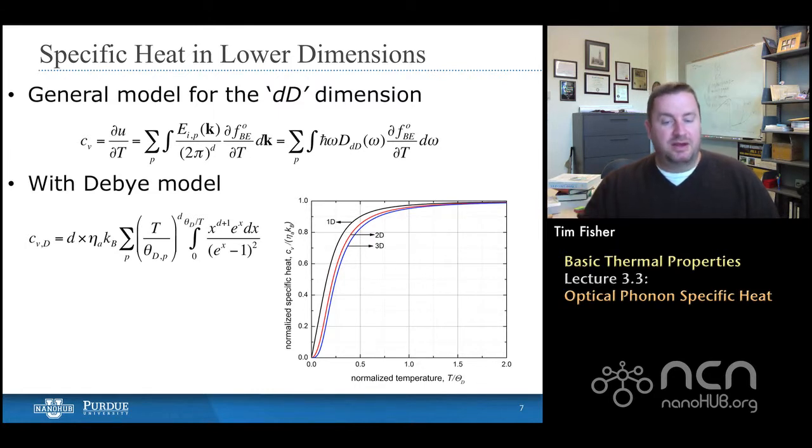For 2d, that low temperature exponent is 2. And so you see a little bit of curvature for the very, very low temperatures. And then it does more or less the same thing that the three dimensional curve does. And then for one dimension, the exponent of temperature in that first term of the equation is 1. And so you have a linear specific heat for low temperatures, which then proceeds to asymptote for higher temperatures.